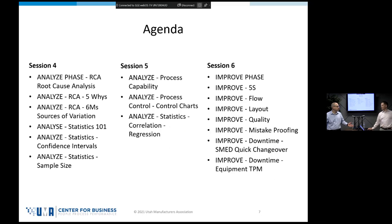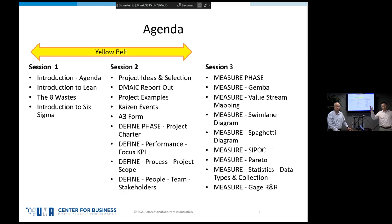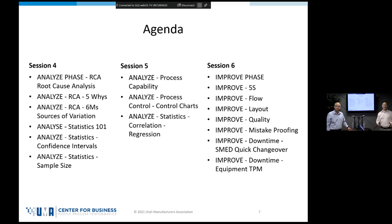Today is session three — we're going to get through the measure phase as best we can. Session four we'll go through the analyze phase, which will take two sessions because that's where we learn a lot of the data-driven and statistical analysis tools of Six Sigma. If you haven't done math in a while, we're going to do some math — but we have software that does the math for us. All you need to know is how to understand what the software is telling you.